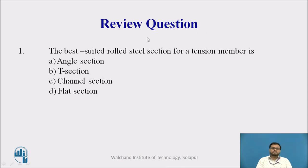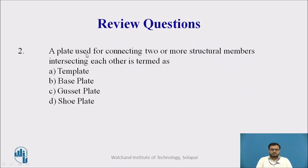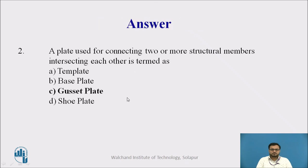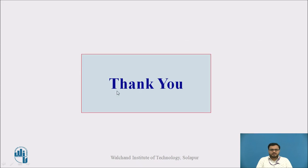We will now see some review questions. The first question is: the best-suited rolled section for a tension member is — you can pause the video and answer — the answer is the T-section. The second question is: a plate used for connecting two or more structural members intersecting at a joint is termed as — the answer is a gusset plate. Thank you.